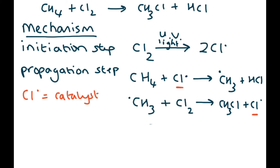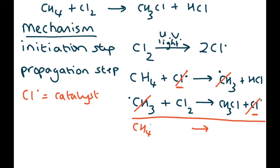Another thing to note: if you add up the two propagation steps together — everything on the left and everything on the right — the chlorine radical and the methyl radical cancel out, and you are left with the overall equation. This is a useful way to double-check your answer.